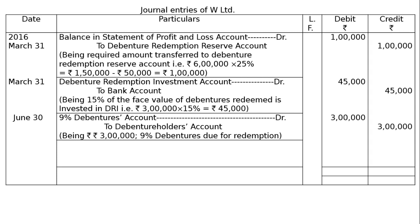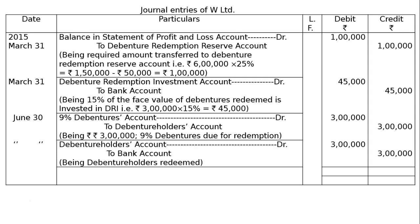They have rupees 6 lakhs DRR but want to redeem only 3 lakhs. The last entry is debenture holders account debited to bank account for rupees 3 lakhs, being debenture holders redeemed or paid off. We have not passed the entry for debenture redemption reserve account debited to general reserve because all the debentures have not been redeemed — only 50% has been redeemed.